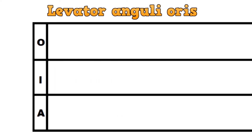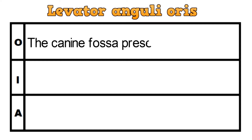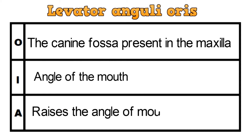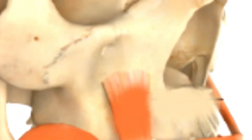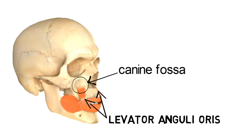The next muscle is the levator anguli oris. By the name we can tell that it is related to the angle of the mouth. The muscle originates from the canine fossa present in the maxilla and gets inserted in the angle of the mouth. Its action is to raise the angle of the mouth. The area in the circle is the origin — the canine fossa of the maxilla — and these muscles inserted in the angle of the mouth are the levator anguli oris.